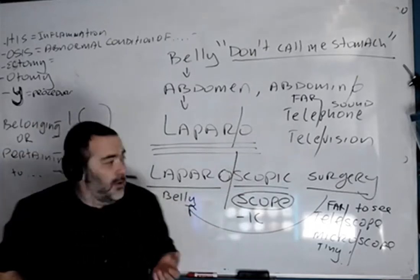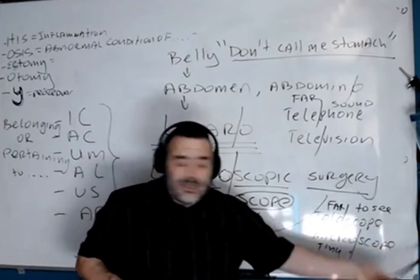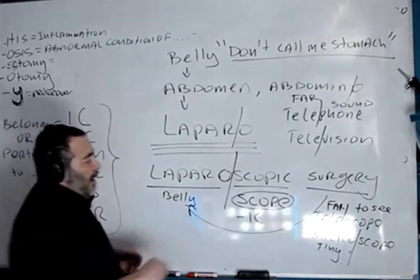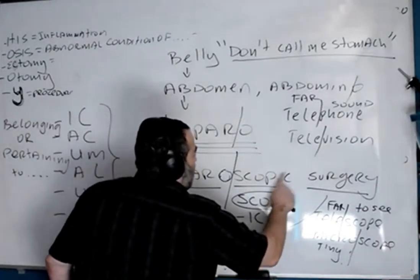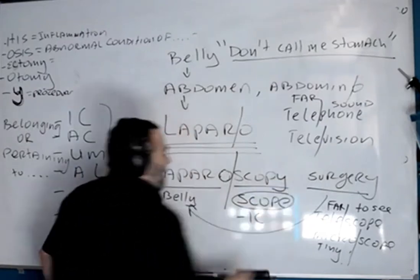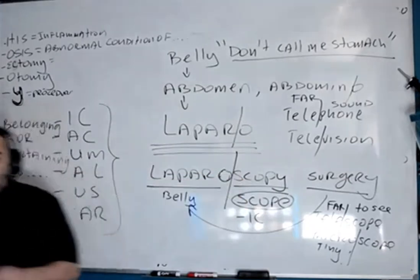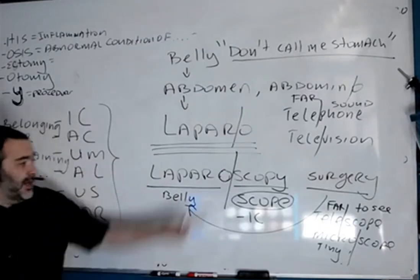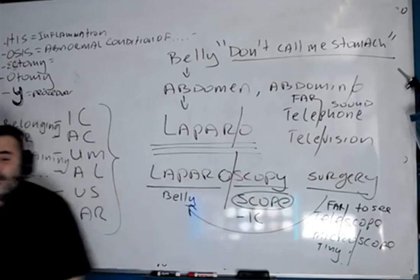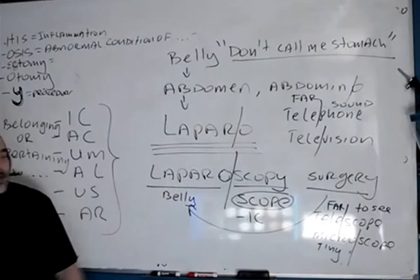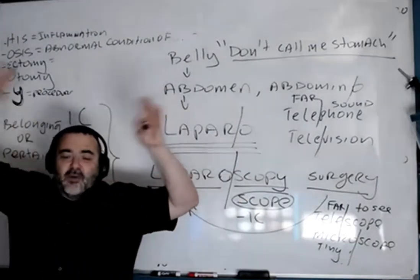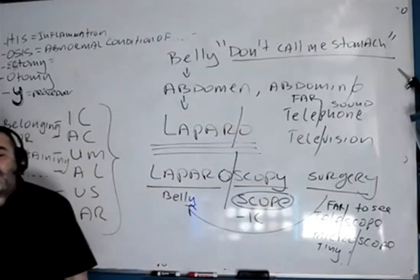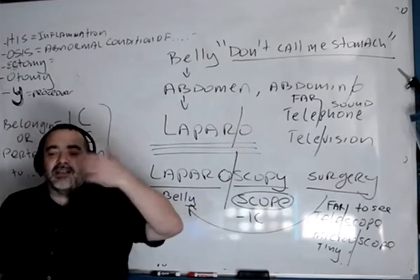There are endoscopes hanging right here on my wall. Now, what if I were to change the suffix from -ic to -y? What would that make this? I got rid of -ic and replaced it with -y. Instead of laparoscopic, which is kind of a vague term, I called it a laparoscopy. Now I'm talking about a procedure.